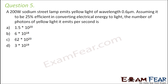Question number 5. A 200 W sodium street lamp emits yellow light of wavelength 0.6 micrometers. Assuming it to be 25% efficient in converting electrical energy to light, the number of photons of yellow light it emits per second is? So in this question, we are talking about power and we are also talking about efficiency.